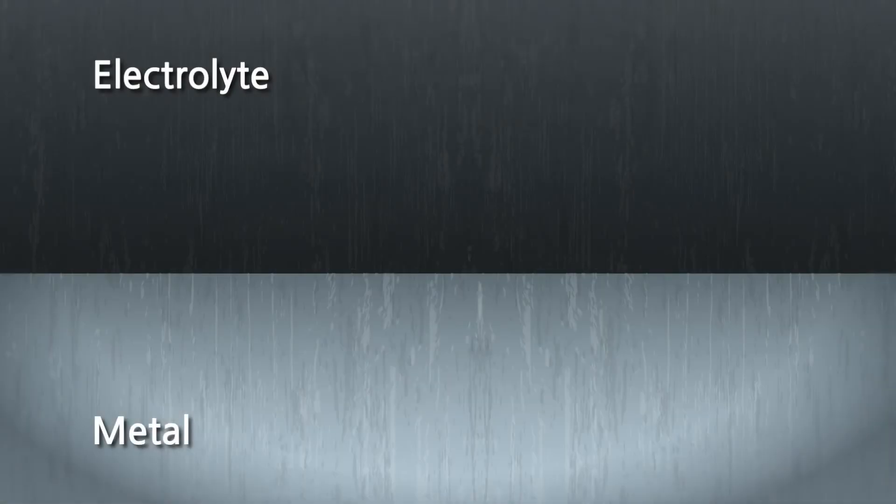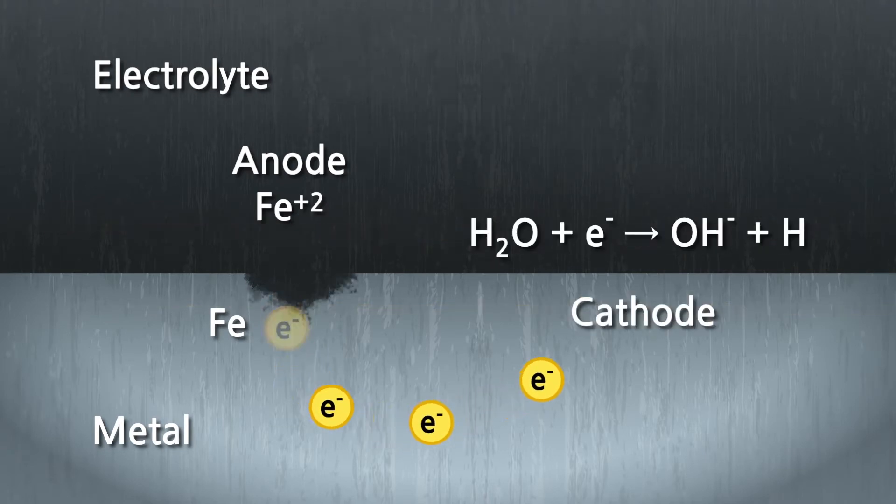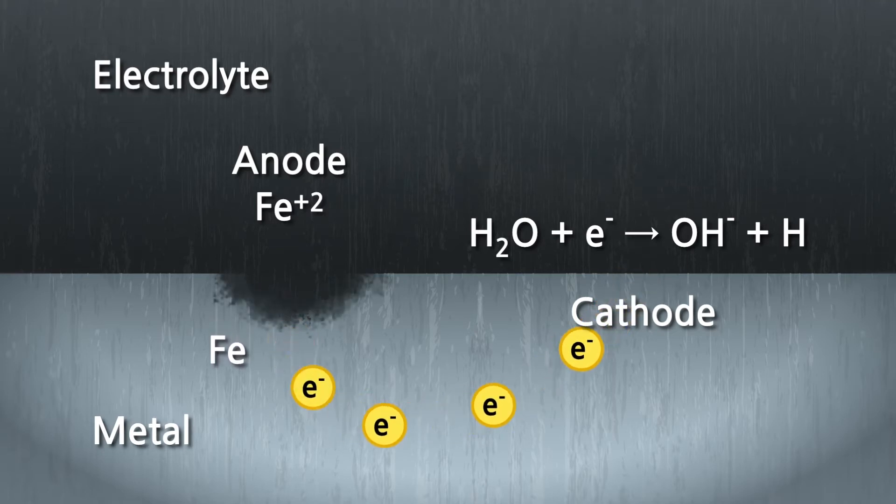In order for metal loss to occur through corrosion, a corrosion cell must be present. The corrosion cell includes an anode, where oxidation of the metal occurs, and a cathode, where a reduction reaction occurs. The anode and cathode have an electrical connection through the metal itself, and an electrolyte connecting the two must be present.